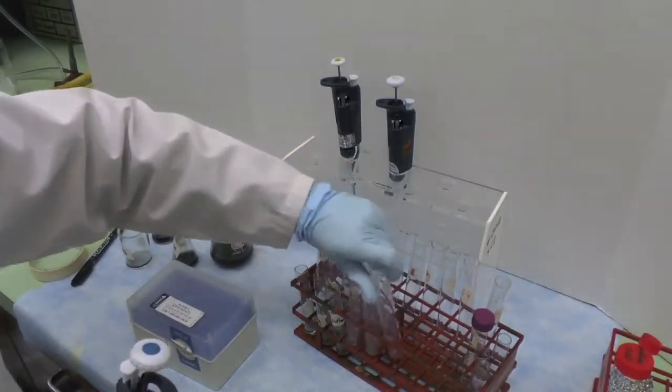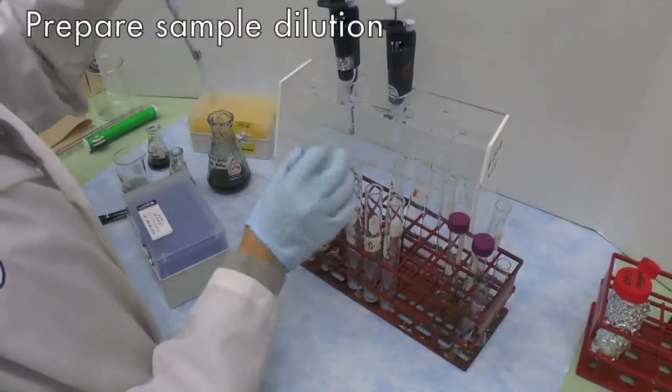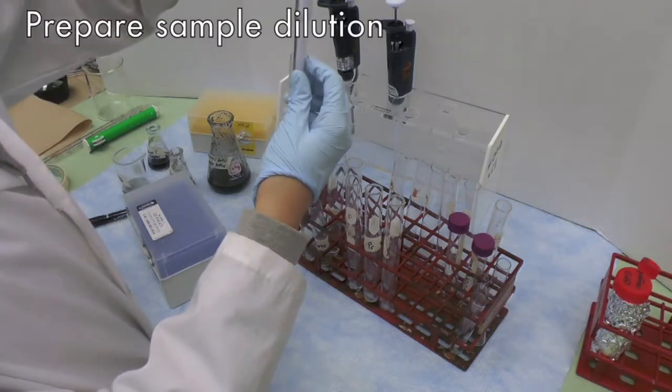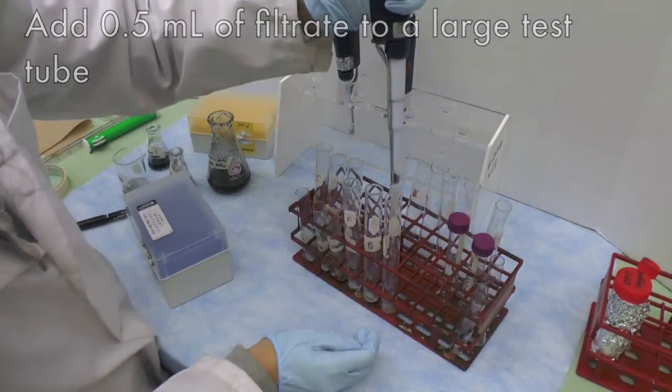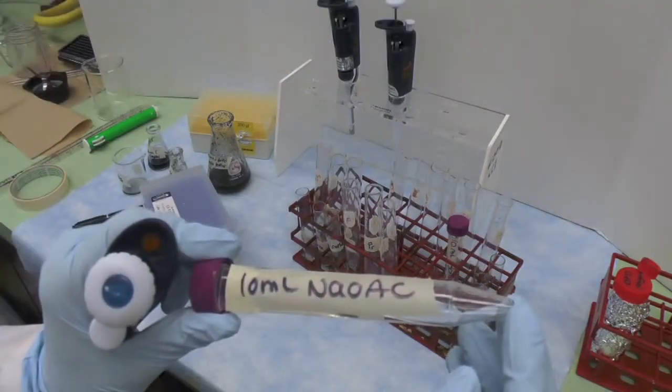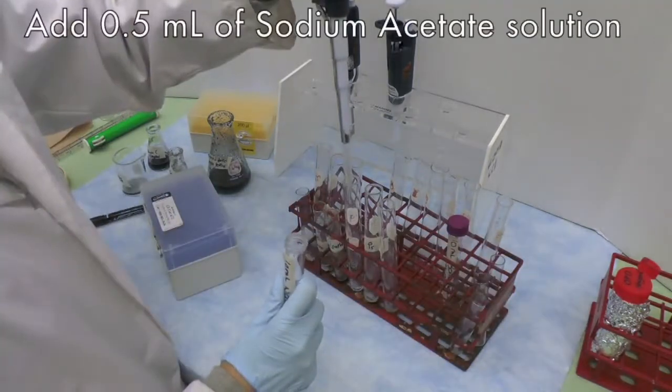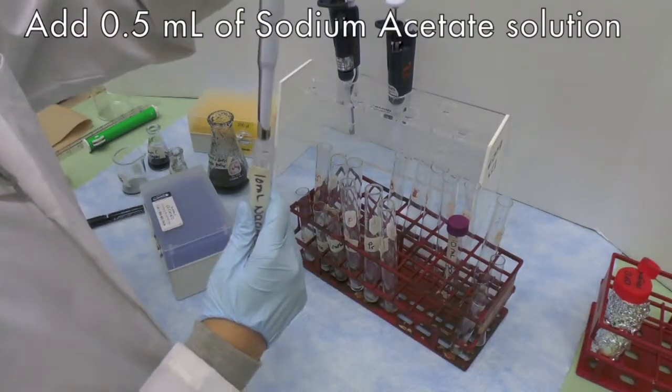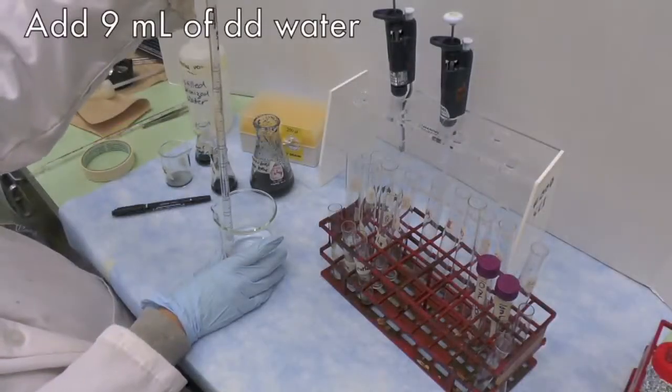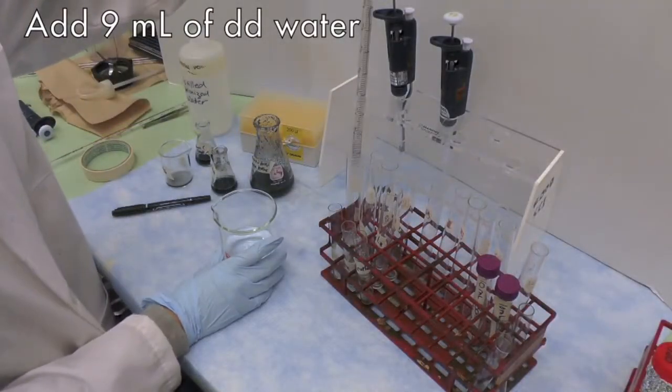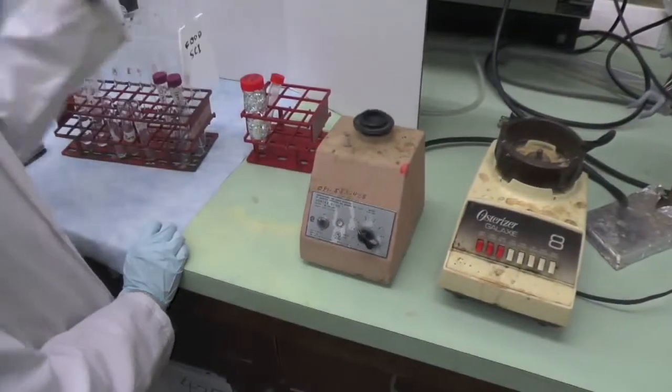Meanwhile, prepare the standard dilution or sample dilution by transferring 0.50 ml of each filtrate into a separate large test tube. Label clearly to differentiate your samples. Add 0.50 ml of sodium acetate solution into each large test tube along with 9.0 ml of dd water. Vortex the large test tubes.